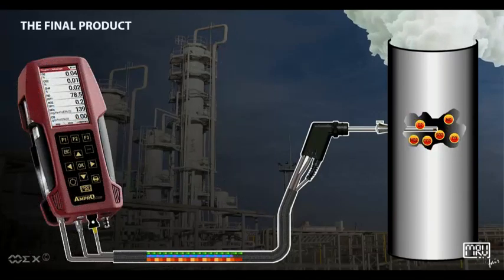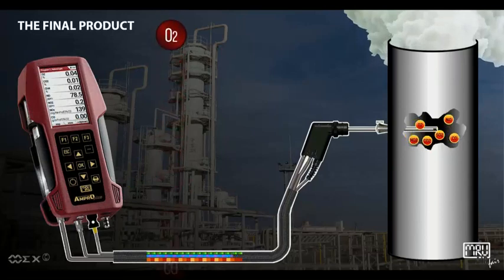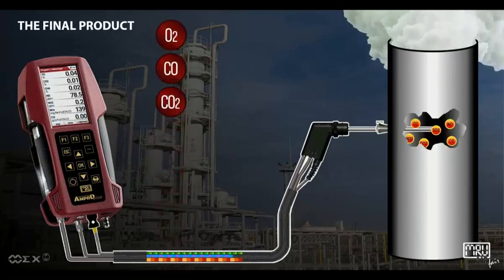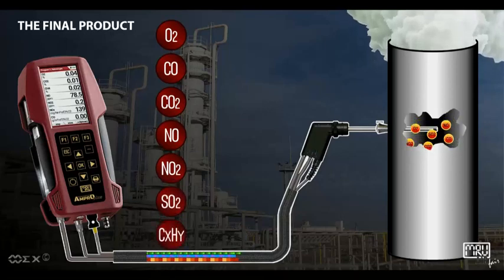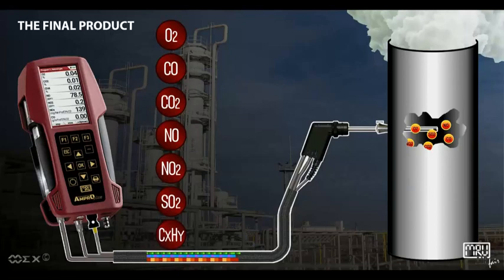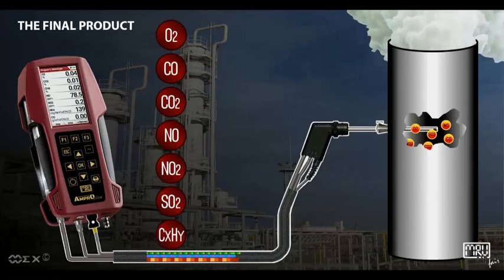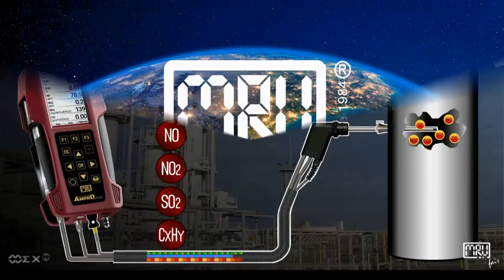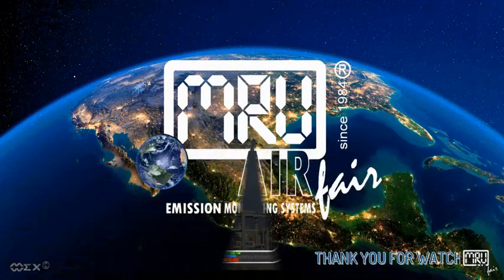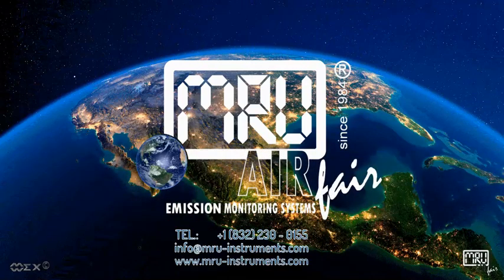Here is one of many MRU solutions: the AMP Pro Plus, measuring O2, CO, CO2, NO, NO2, SO2, and CxHy, as well as draft and pressure, stack temperature, and ambient air temperature — calculating all combustion and emission parameters that you need. Thank you for watching our videos; please don't forget to like this video and subscribe to our channel.